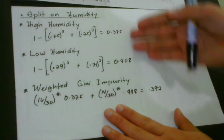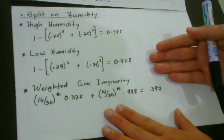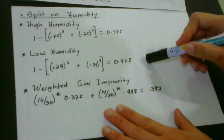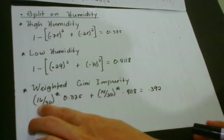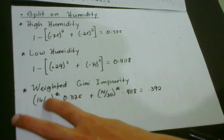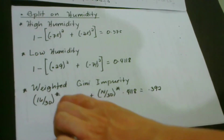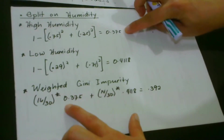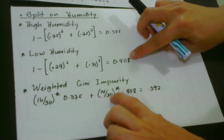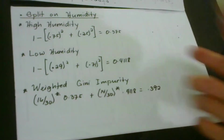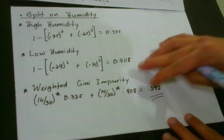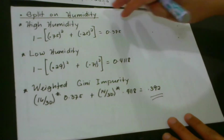With these two values, we calculate the weighted Gini impurity for both nodes. Since we have 16 days for high humidity, we compute (16/30) × 0.375, plus (14/30) × 0.4118, and we get 0.392. This is the result of the Gini impurity for the split on humidity.